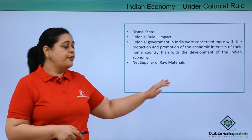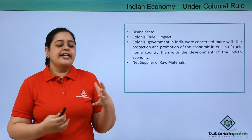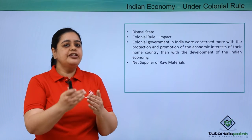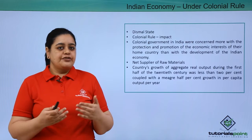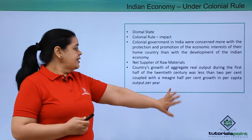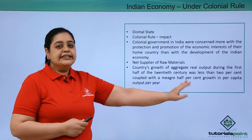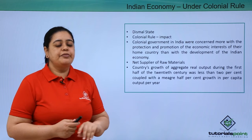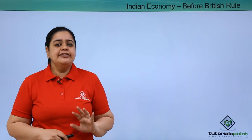We became the net suppliers of raw materials. As commercialization was encouraged, we started exporting cotton and tea, while importing finished goods — for example, if we exported cotton, we imported garments. The country's growth of aggregate real output during the first half of the 20th century was less than 2%, coupled with a meager half percent growth in per capita output. As such, the state of the economy was in a very dismal state.